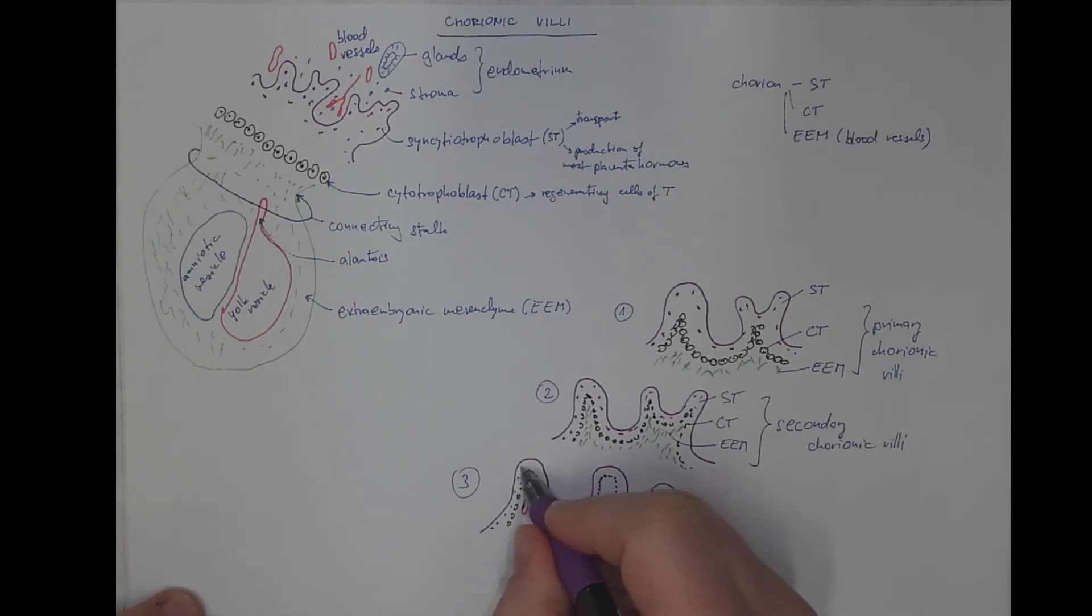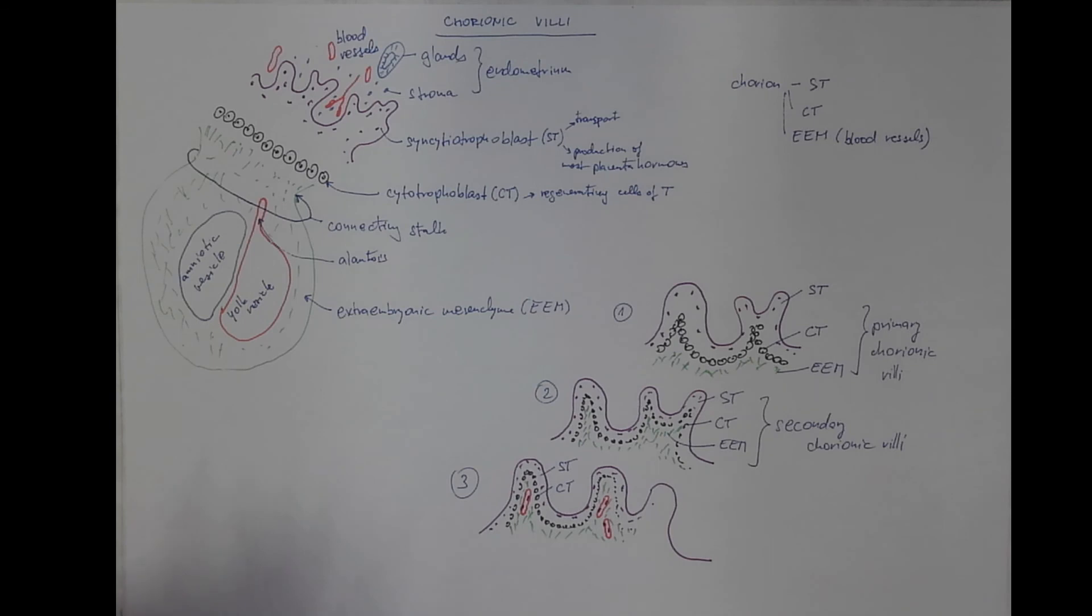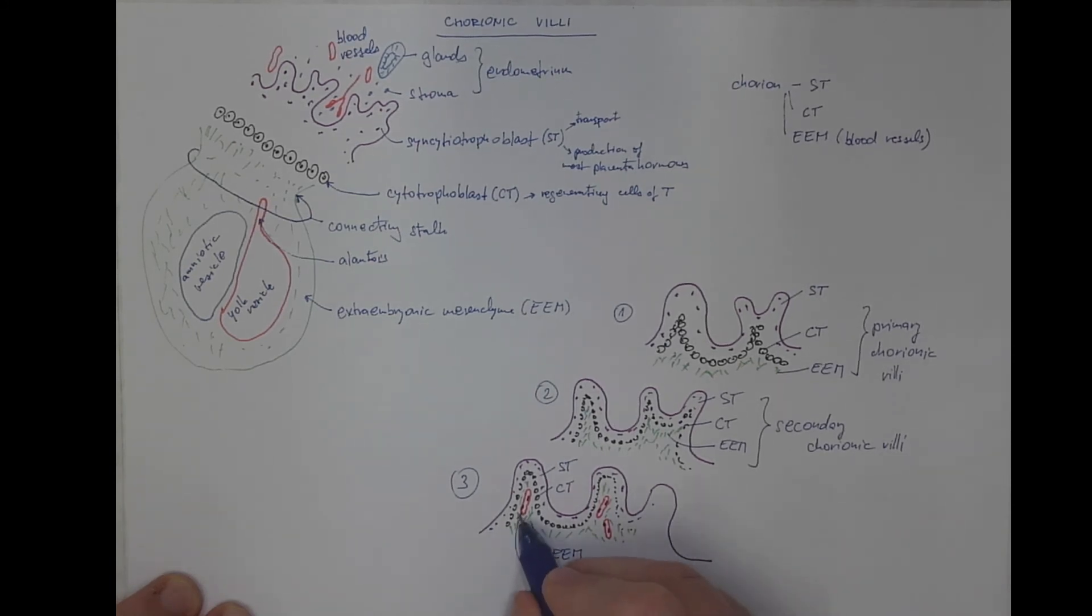So the nuclei to the syncytiotrophoblast with various orientations. The point here is that the extra embryonic mesenchyma has a vasculogenic potential when some of its cells differentiate into vascular endothelium. Now the villi include capillaries.